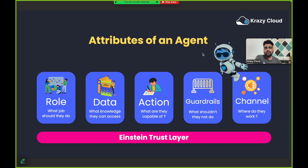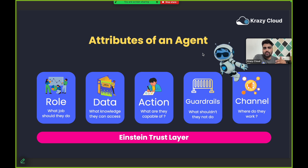The fifth attribute is channel — where that agent is working. When we create AI agents using Agent Force, they can be deployed to multiple channels. This defines which channel your agent is on — whether it's WhatsApp, Facebook Messenger, a customer community portal, or an employee agent.